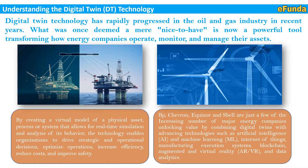Companies like BP, Chevron, Equinor and Shell are just a few of the increasing number of major energy companies unlocking value by combining digital twin with advancing technologies such as artificial intelligence (AI), machine learning (ML), internet of things (IoT), manufacturing execution systems, blockchain, augmented and virtual reality (AR and VR), and data analytics. This is how digital twin technology helps the oil and gas industry improve operations, maintenance and protection of assets.